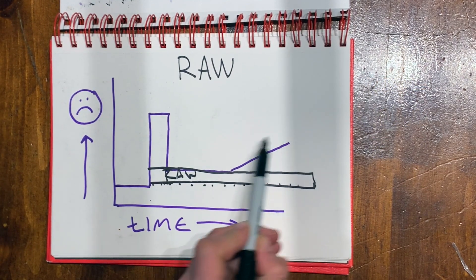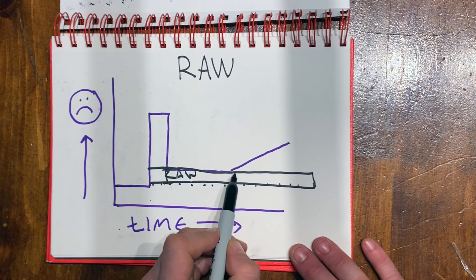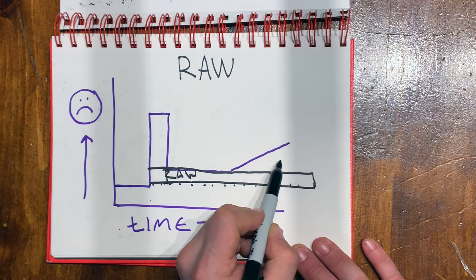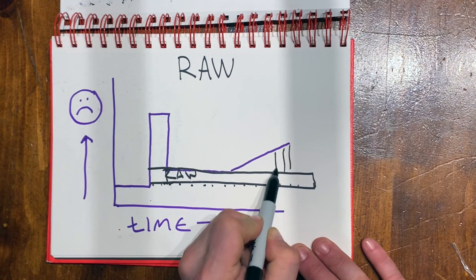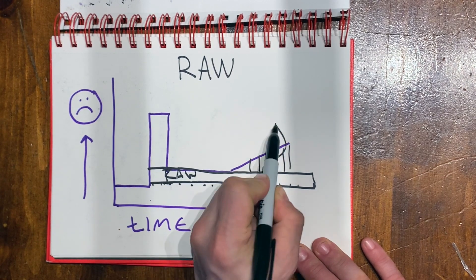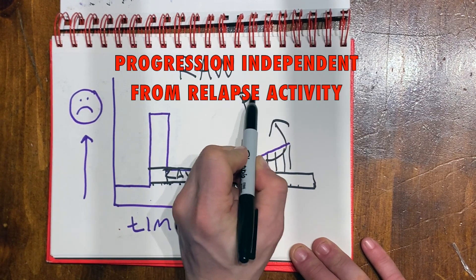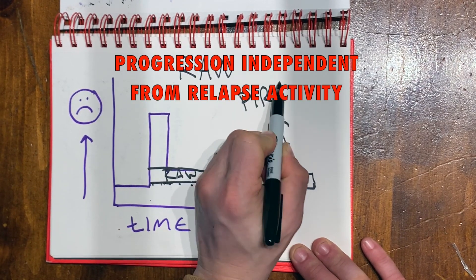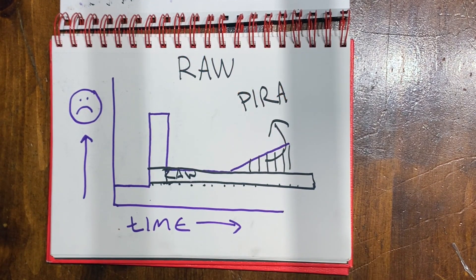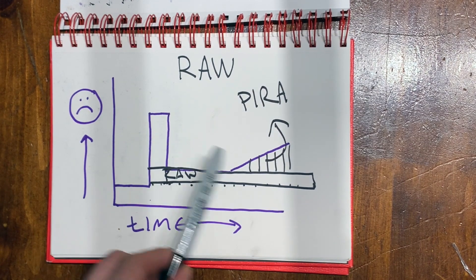But what about this? Here we see that they got worse and there was no attack. The space under here, this is progression independent from relapse activity. And in the real world, with real people with MS, we see both.